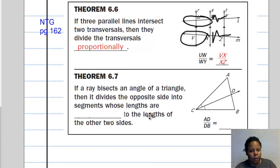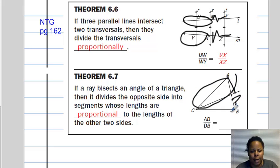So if we take a look here at our notes, if a ray bisects an angle, then it divides the opposite side into segment lengths that are proportional to the lengths of the other two sides of the triangle. So as we can see here, AD compared to DB is equal to, if you said AC over AB, you're absolutely correct. And that's the end.